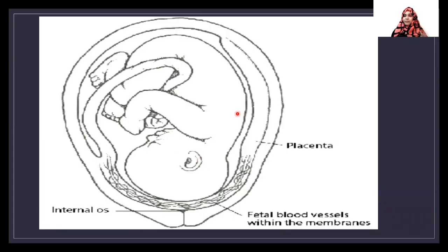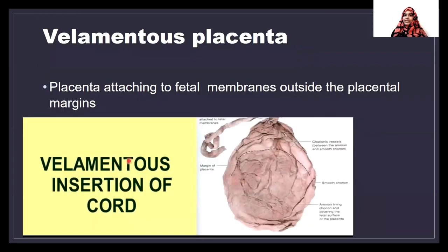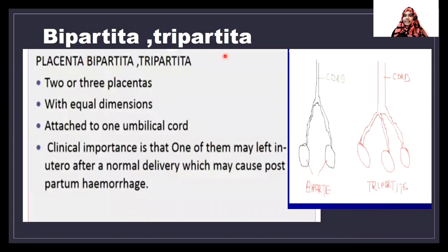Vasa previa is also similar — it is a low-lying placenta above the internal os, which can also cause bleeding. Next is velamentous placenta, where the umbilical cord attaches to the fetal membrane outside the placenta. As you can see here, the umbilical cord attaches to the outside border of the placental margin.